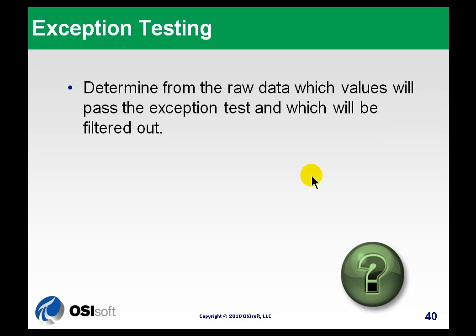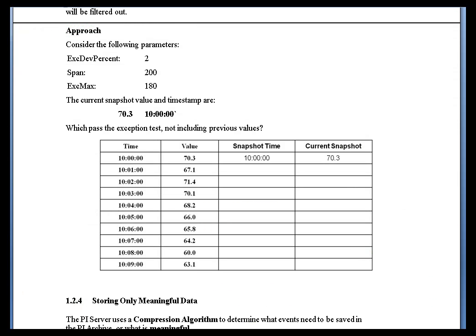I'd like you to try to determine from a set of data which values would pass the exception test, given certain exception specifications. If you take a look at this example here, we've got three attributes we need to keep in mind as we look at this set of data that extends forward in time.